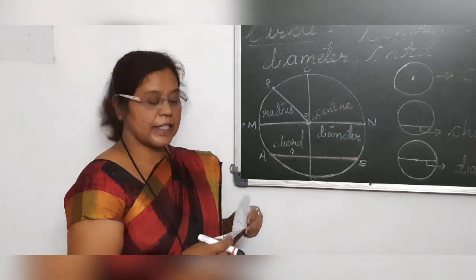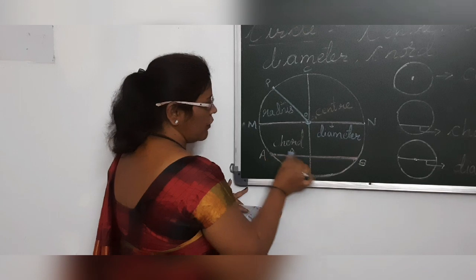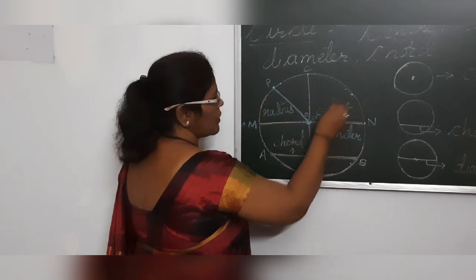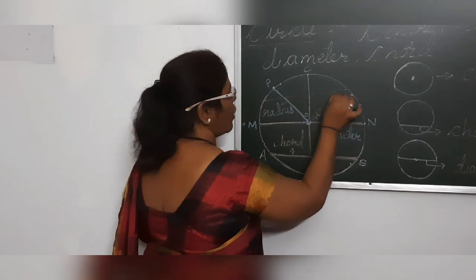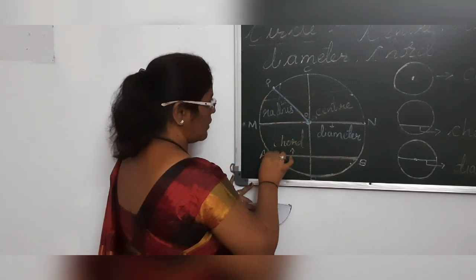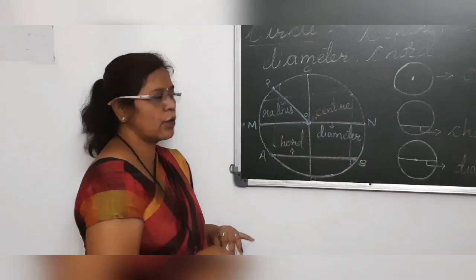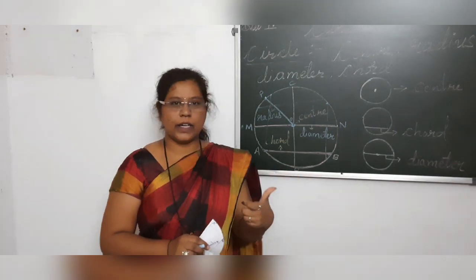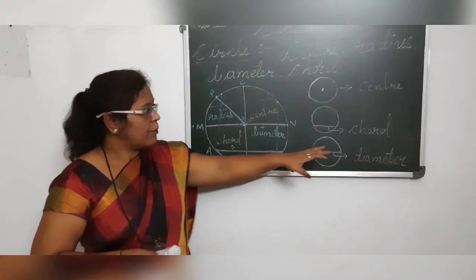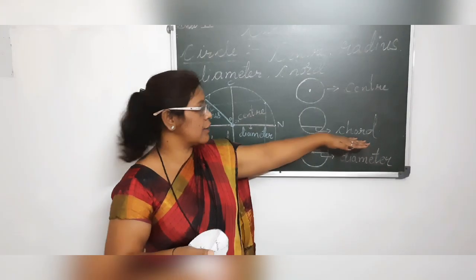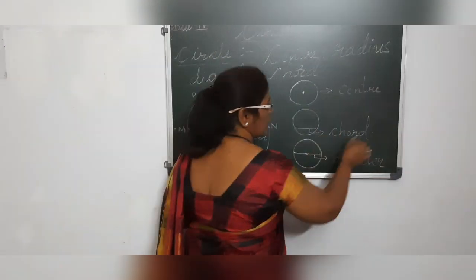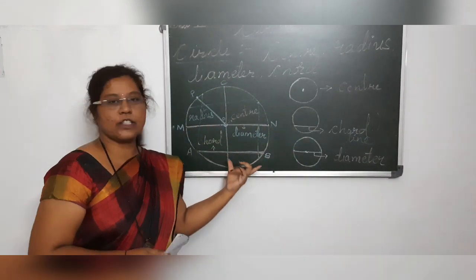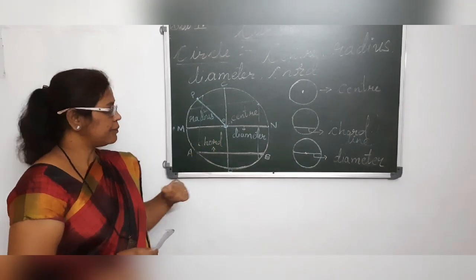Now, chord. Chord means a line which you draw on the circle between two points, wherever on the circle, but it should not pass through the center of the circle — it is called a chord. Chord is nothing but a line on the circle which joins two points. It is a special line on the circle. Chord means a line on the circle which connects two respective points on the circle.